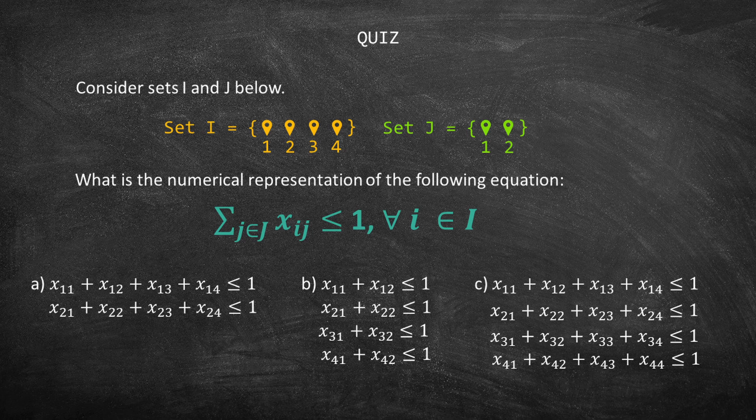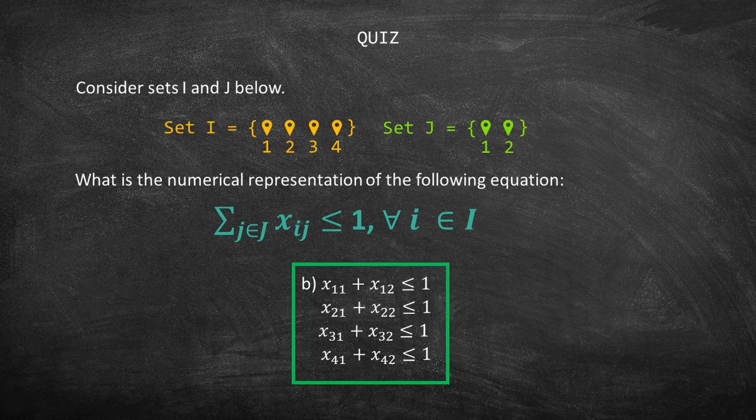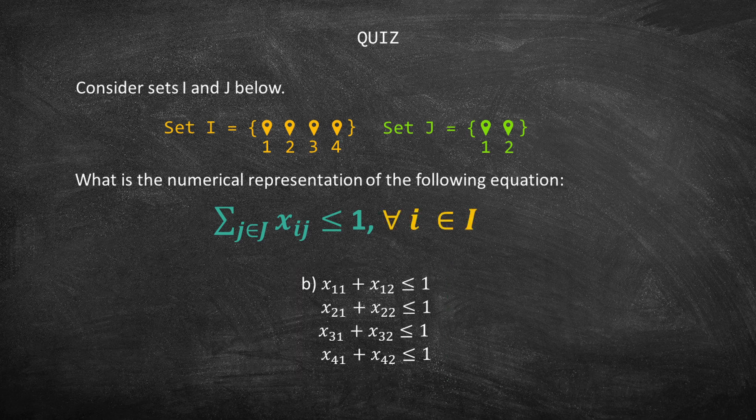I hope that by now you have figured out the best option. The correct answer is letter B. First, the equation states that there will be one constraint for every I in set I. Since we have four elements in set I, we need four constraints, one for each element. This equation also states that there is a sum of J in set J. Therefore, for each constraint, I will combine the elements in set J with I. For example, if I equals 1, then I will have x11 and x12. When I equals 3, I will have x31 plus x32. Therefore, the correct answer is B.